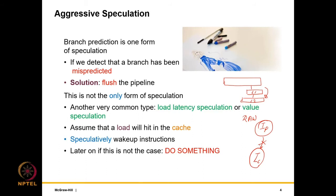If the value prediction is wrong, that is speculation — we not only predict but also move forward. If the speculation is wrong, there is trouble and we need to do something. In an aggressive processor we do a lot of guesswork; based on that we wake up instructions and execute them. Sometimes the guesswork is wrong and in that case we need to recover. That is the crux of our discussion.